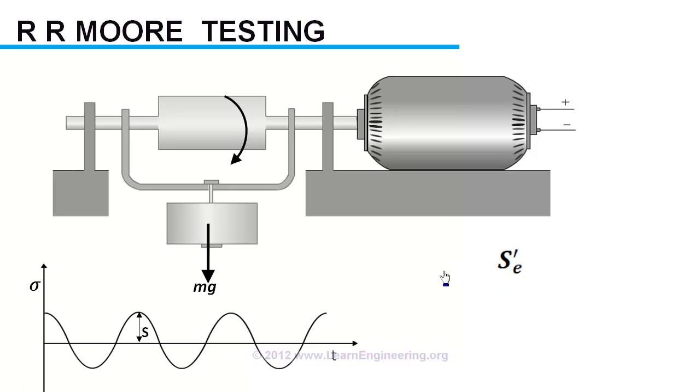But endurance limits so obtained will be unrealistic for practical uses, because here we are using a highly polished, homogenous, and zero surface defect specimen. In actual cases there can be scratches and surface defects on metal surface. There could be discontinuities like this. All these factors will make the specimen fail much before the ideal endurance limit value obtained from R.R. Moore test.